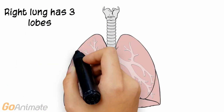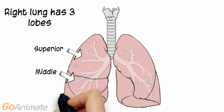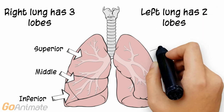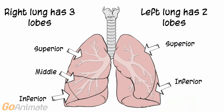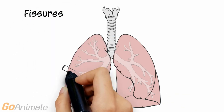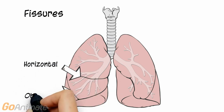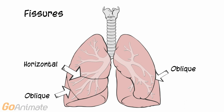The right lung has 3 lobes: superior, middle, and inferior lobes. The left lung only has 2 lobes, which include a superior and inferior lobe. The right lung also has horizontal and oblique fissures. The left lung only has an oblique fissure.